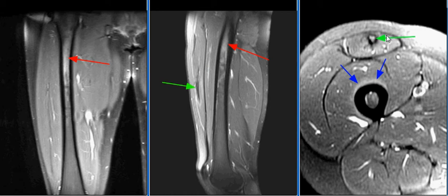There is a chronic tear of the indirect tendon of the deep head of the rectus femoris muscle with tendon retraction and fibrous encasement, as seen on this image with the green arrows.